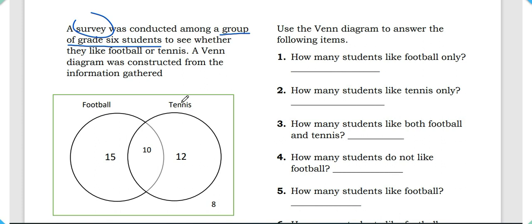In our universal set — let's call it U, everything in our box — we see there are smaller sets. There's a set of students from our survey that like football, and there's a set of students that like tennis. So while our universal set is the entire group of Grade 6 students surveyed, within it are smaller sets of students that have something else in common.